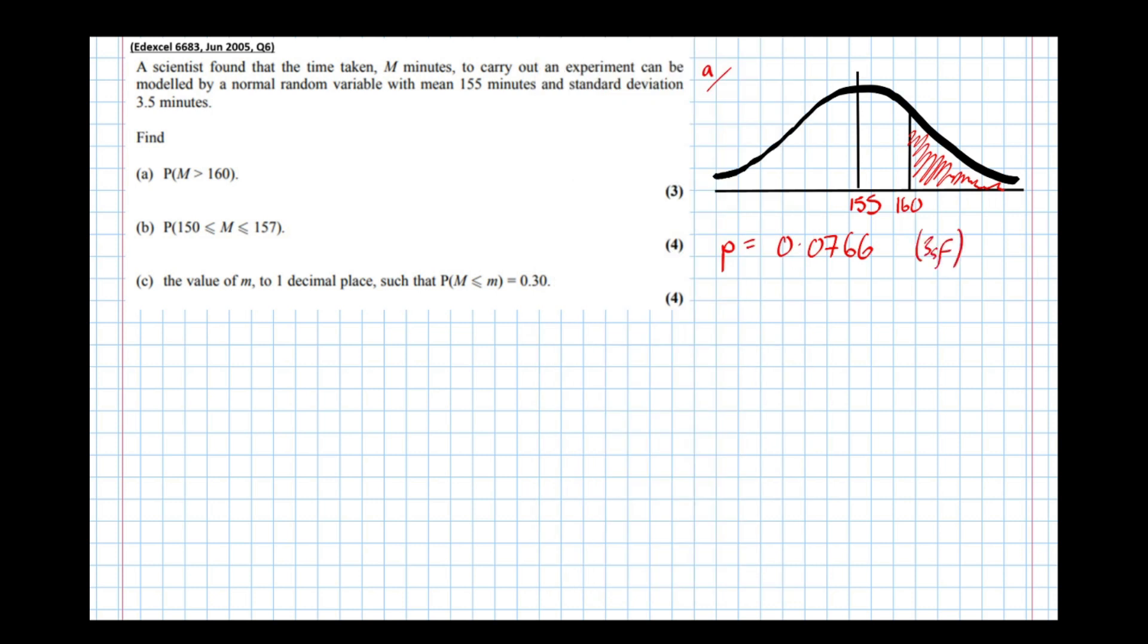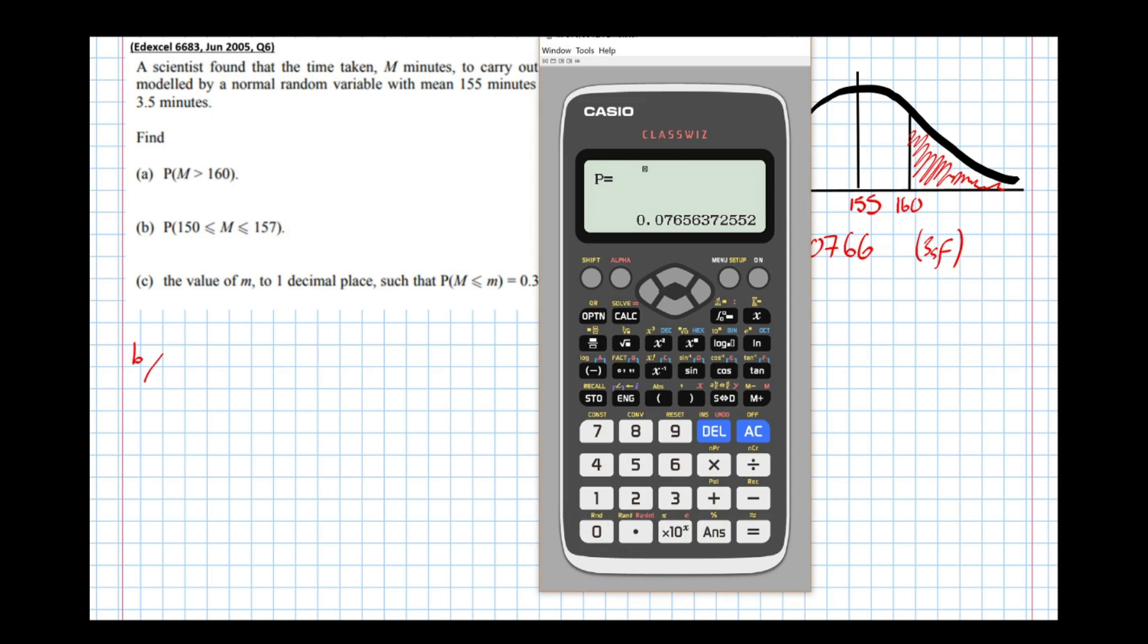Okay, part B. Find the probability that M lies between those two values. Well, nice and easy. Let's go back. The lower bound is 150. This time the upper bound is 157. Same mean and standard deviation.